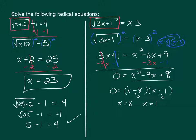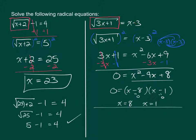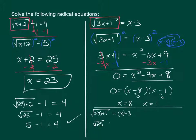With square root equations it's very important that you check your answers. I'm going to substitute 8 in for every X to see if both sides are equal. The square root of 3 times 8 plus 1 should equal 8 minus 3. So 3 times 8 is 24, plus 1 is 25 — so this is the square root of 25 equals 8 minus 3 which is 5. The square root of 25 is 5. Check — that works. I'm going to circle X equals 8.